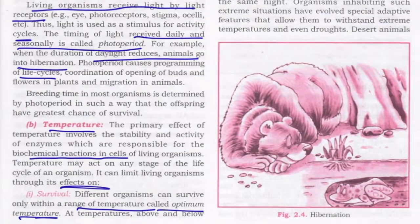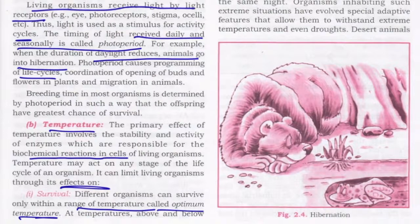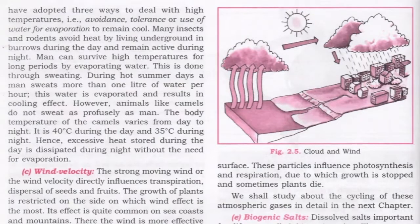Growth, development, and reproduction activities of organisms occur within a given temperature range. The density of vegetation gets reduced when there is a variation from the equator to higher altitudes as well as from sea level. In desert regions, temperature can reach 50 degrees Celsius during summer and below 10 degrees Celsius in the same night. Desert animals have adopted three ways to deal with higher temperature: avoidance, tolerance, or use of water for evaporation to remain cool.